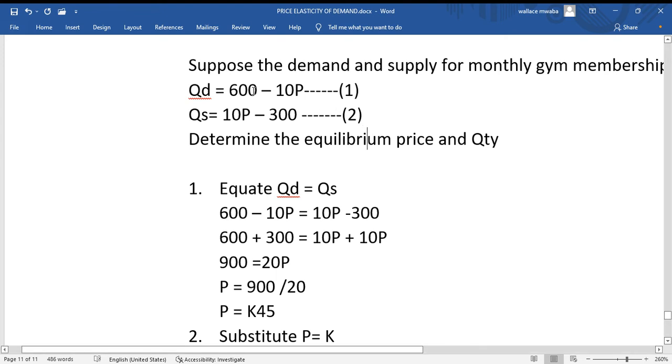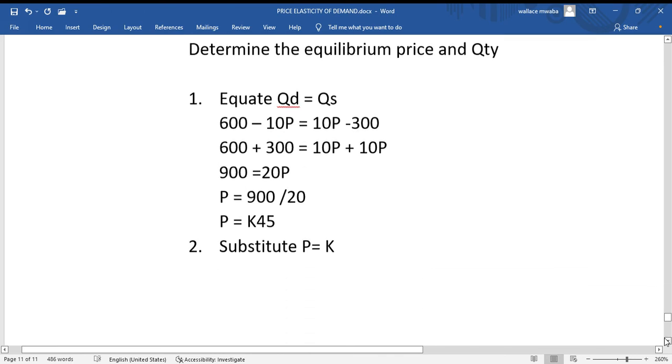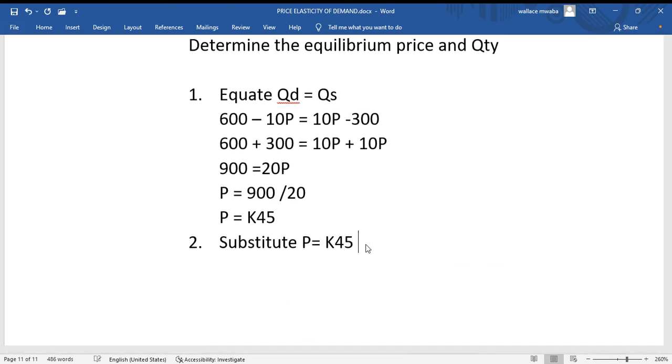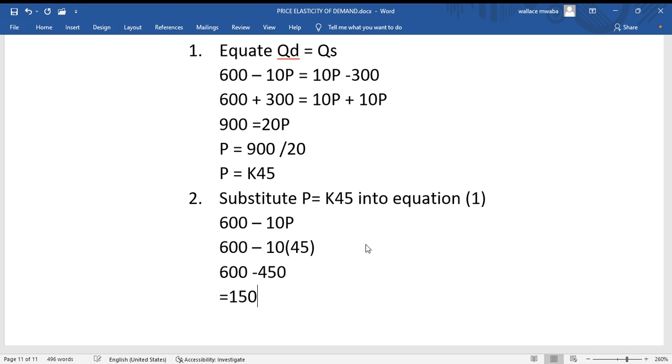So let's go with the first equation. 600 minus 10P. Let's substitute P equals 45 Kwacha into equation one. That is going to be 600 minus 10 times 45, open brackets. This will get 450, so it says 600 minus 450 and we get 150 units.